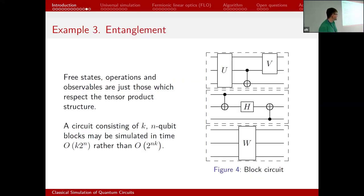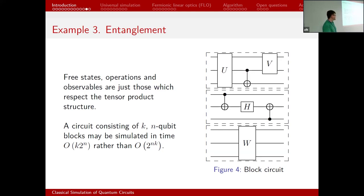Entanglement is a thing you need in a quantum computation. Imagine a quantum computation with 9 qubits separated into three blocks. Within each block, anything can happen, but blocks don't talk to each other. This is efficiently classically simulable — you just simulate each block separately. Without entanglement between blocks, simulation takes time proportional to k × 2^n rather than 2^(nk). So it's efficient in k but not in n.